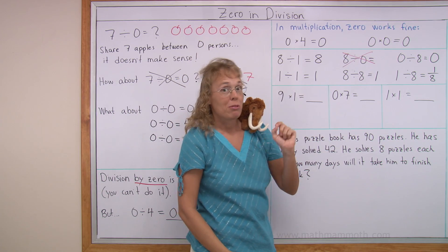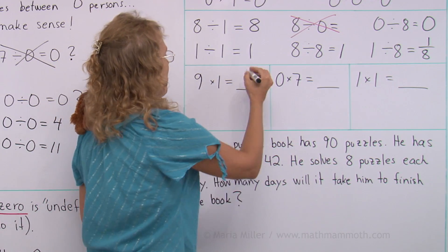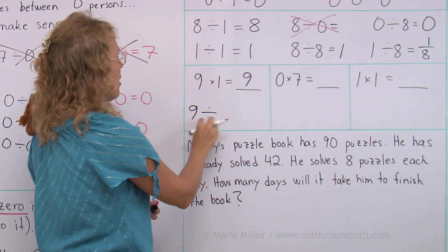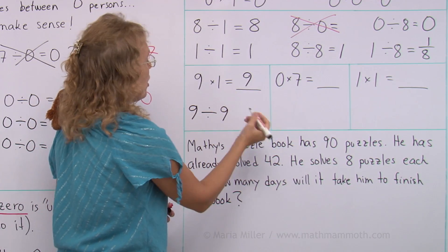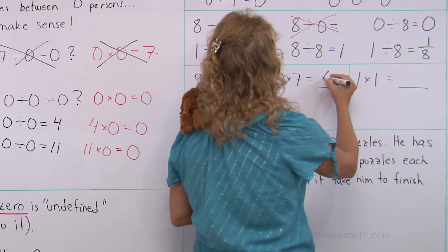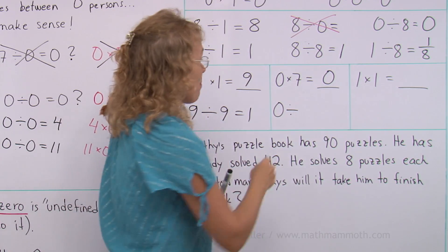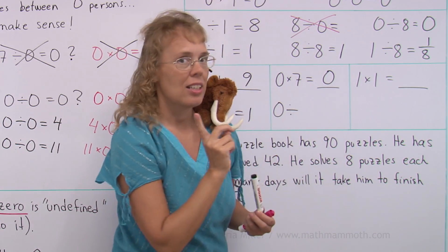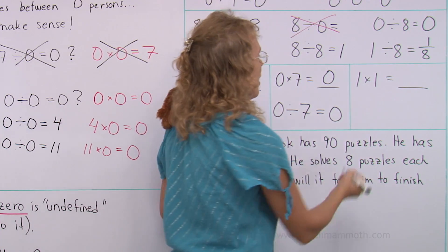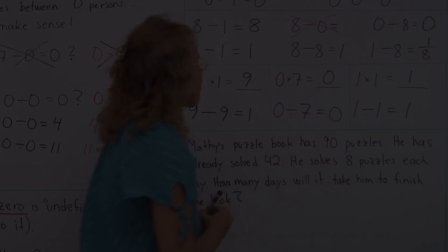For these multiplication problems, we will write a division under it that matches it. Nine times one equals nine. And a matching division, you start with this, with a total. And then you can write nine divided by one, or nine divided by nine. There's two matching divisions for each multiplication. Zero times seven equals zero. And I start with this zero and write a division. This time, I cannot put zero here, right? I cannot divide by zero. So I put seven here, and the answer is zero. One times one equals one. And then one divided by one equals one.